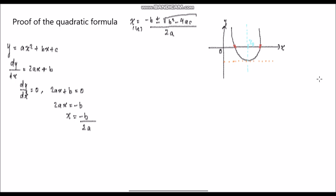Moving on, we still haven't solved for the quadratic formula. In order to do that, we need to basically solve it from this equation — it's completely separate from the proof we have here. It's using completing the square. I'm going to do the proof over here using a different color. So y = ax² + bx + c.